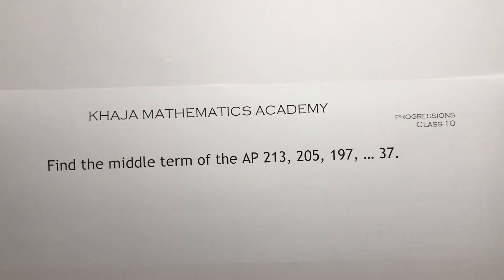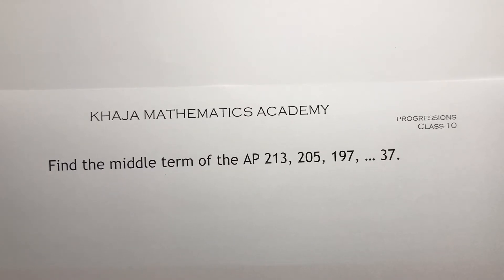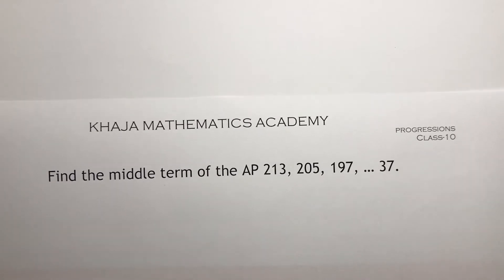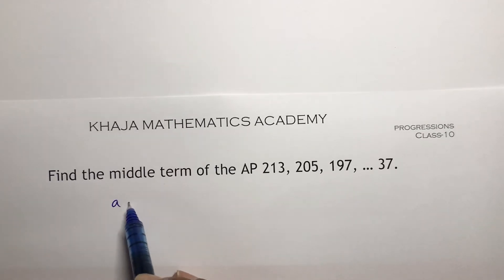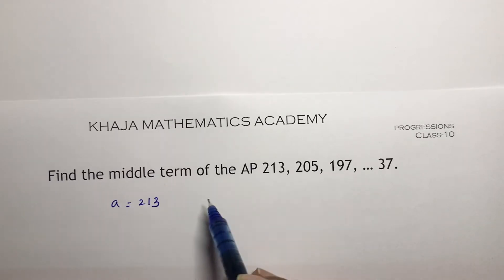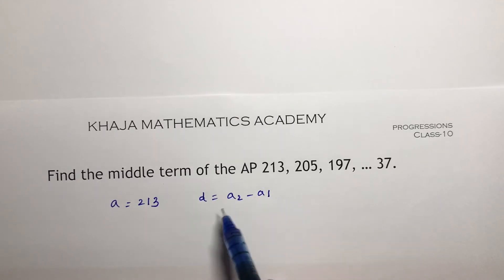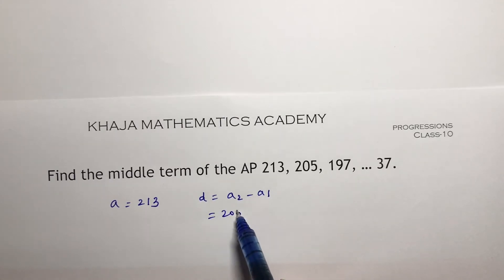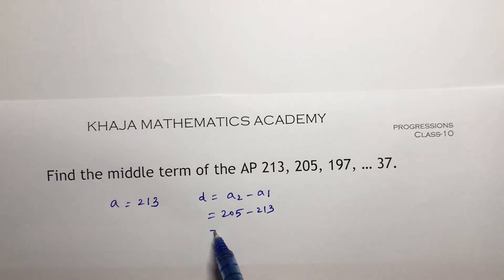Find the middle term of the AP: 213, 205, 197, ..., 37. To find the middle term, first we need to find the number of terms. For that, write the value of a — here in this series the value of a is 213. Then calculate the common difference: a₂ minus a₁ is 205 minus 213, so d will be minus 8.